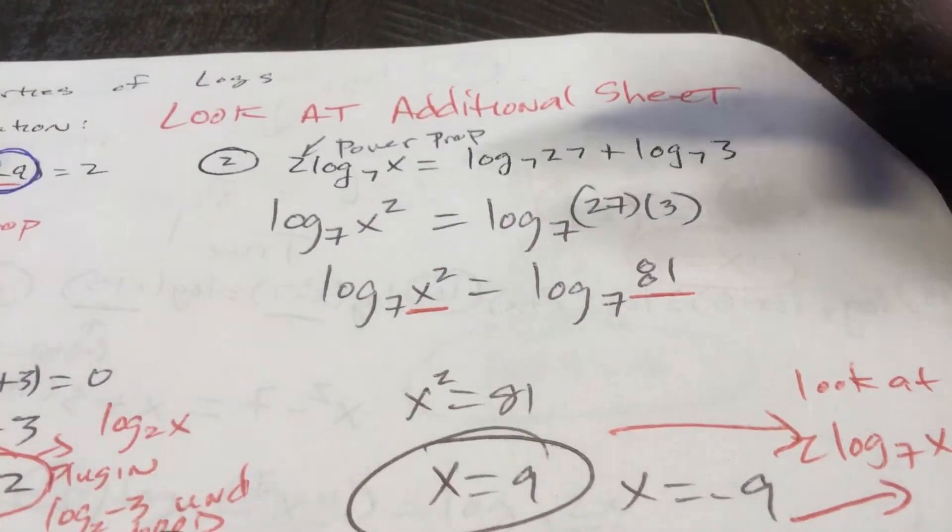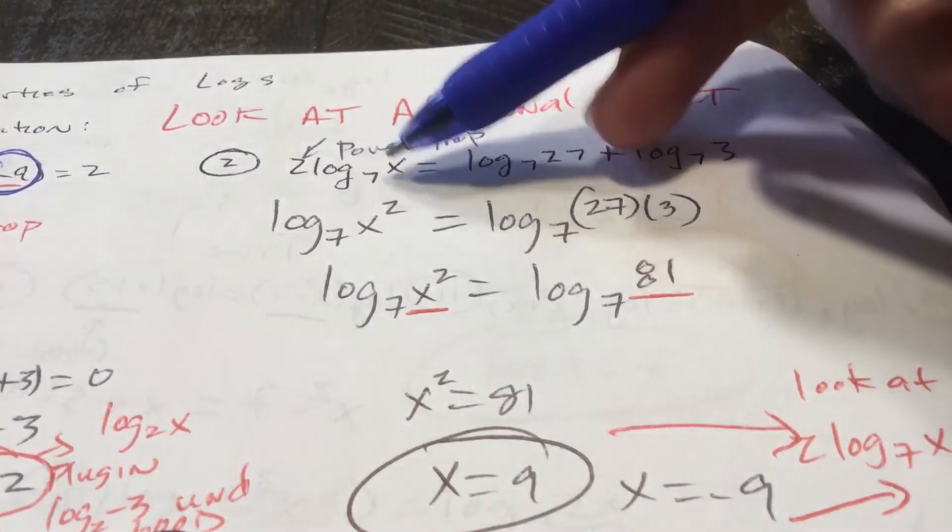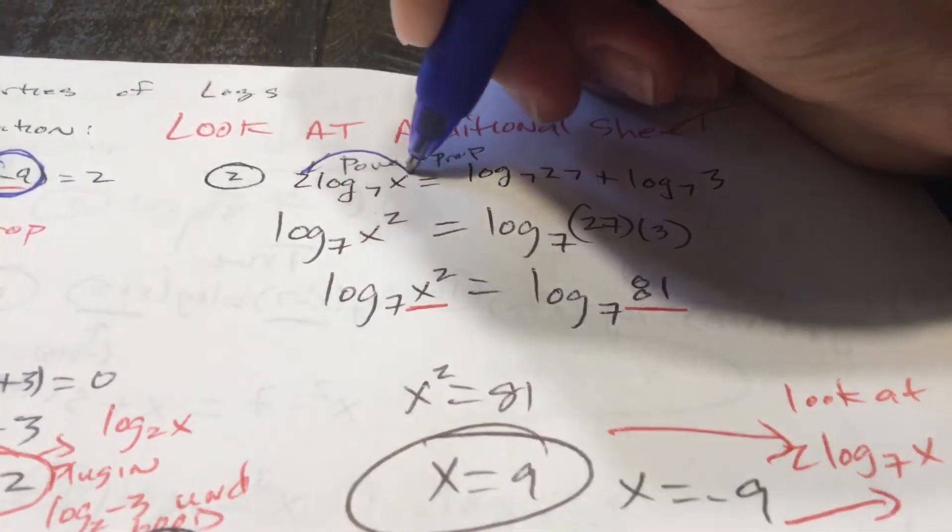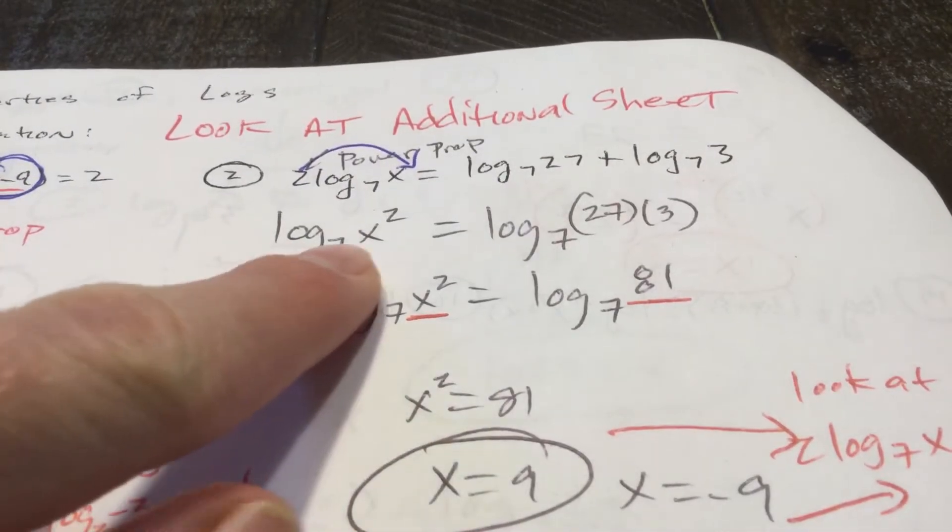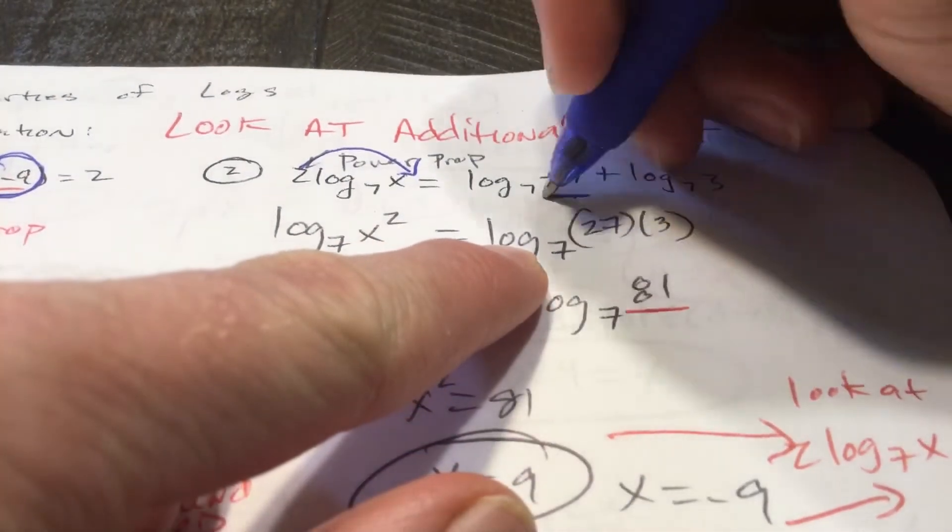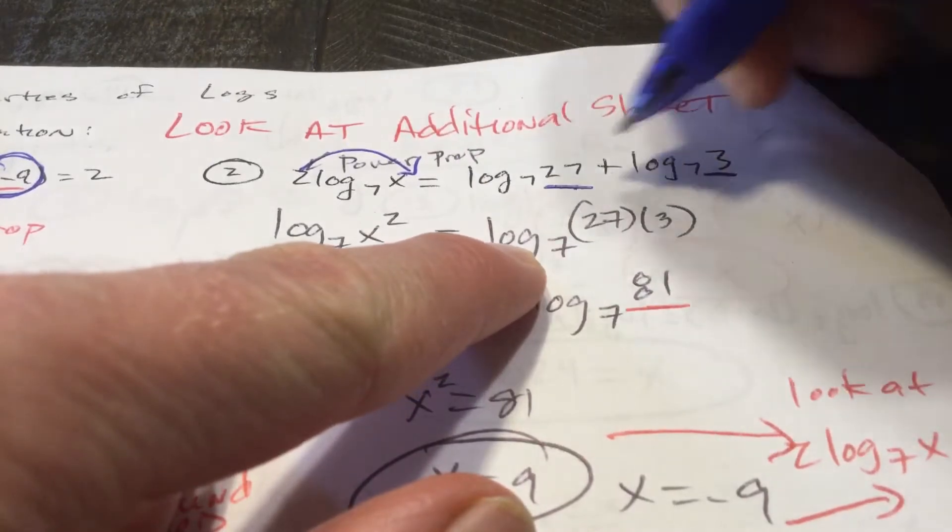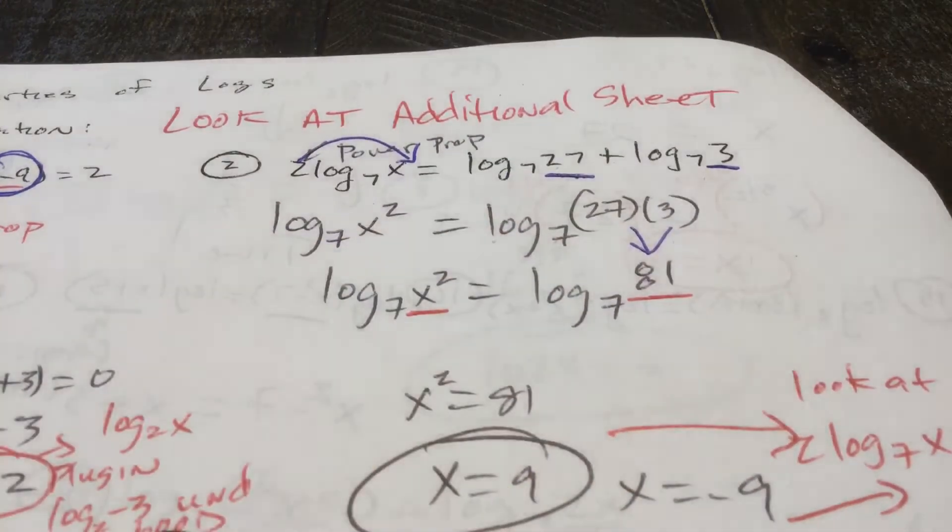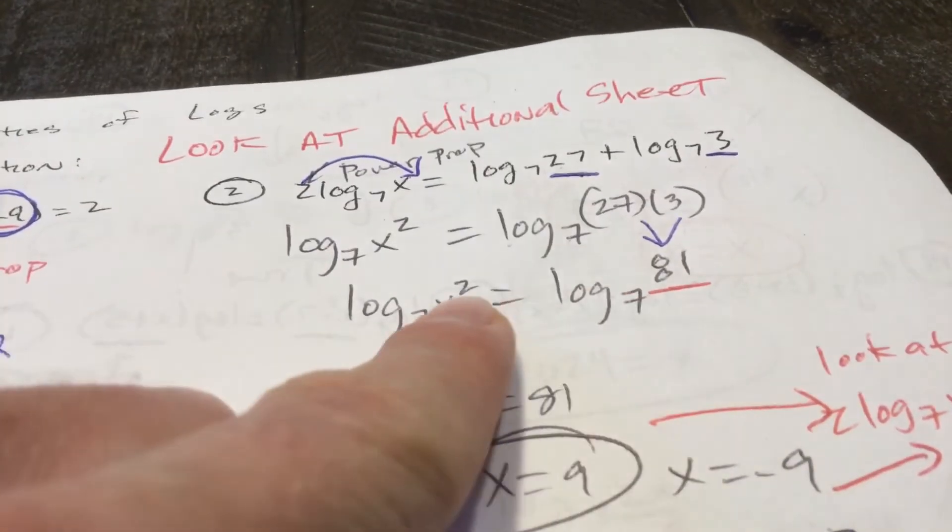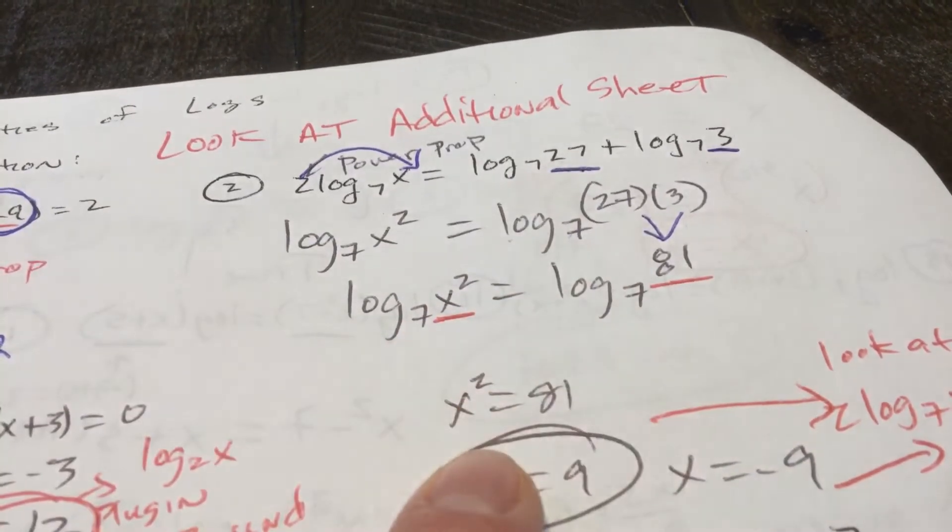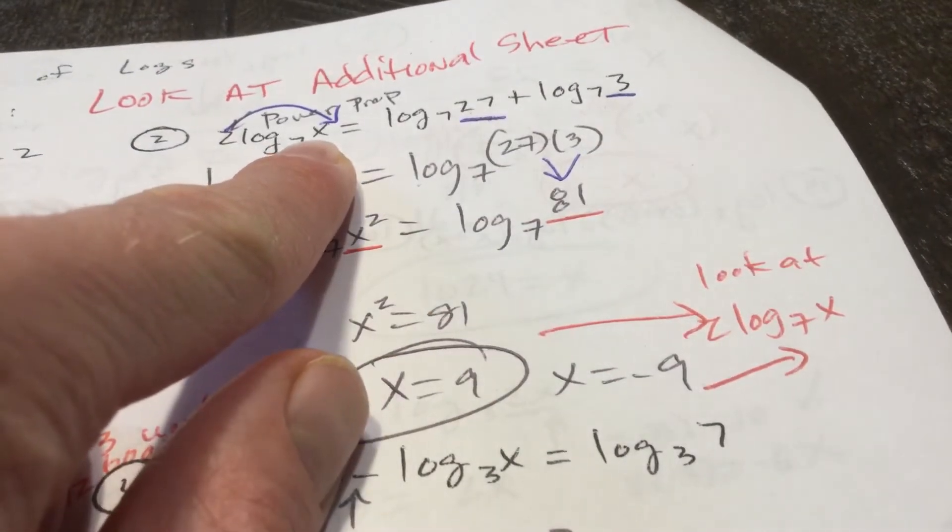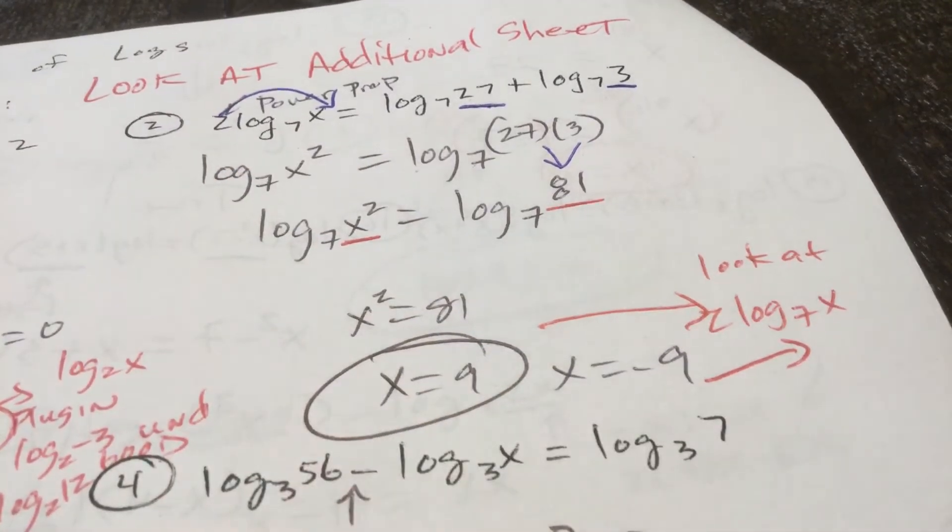Number 2. Everything is log base 7. Again, it is not 2x equals 27 plus 3. First off, you have the power property. Bring this up as an exponent. That would be log base 7 of x squared equals, in the log world, addition means multiplication. So 27 times 3, log base 7 of 81 is what we got there. I have log base 7 of x squared equals log base 7 of 81. That means x squared has got to be equal to 81. That means x is 9 or negative 9. Obviously, log base 7 of negative 9 is undefined. 9 is my only true answer.